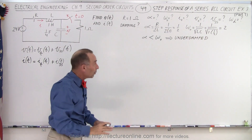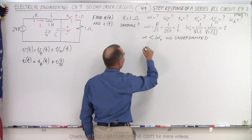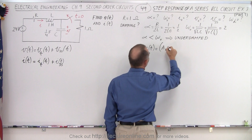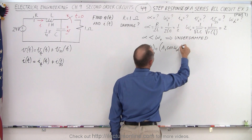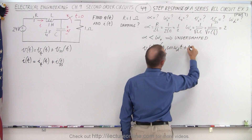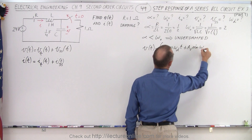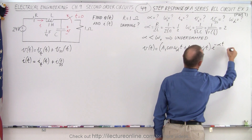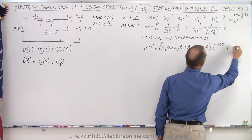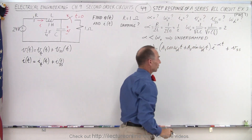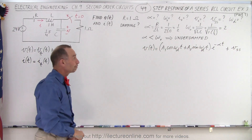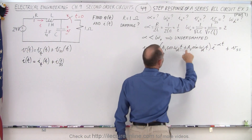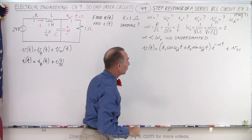For an underdamped case, we use the general equation: V(t) equals A1 times the cosine of the damped frequency times t, plus A2 times the sine of the damped frequency times t, all multiplied by e to the minus alpha t. We also need to include the steady-state voltage. So it all comes down to finding alpha, the steady-state voltage, A1, A2, and the damped frequency.